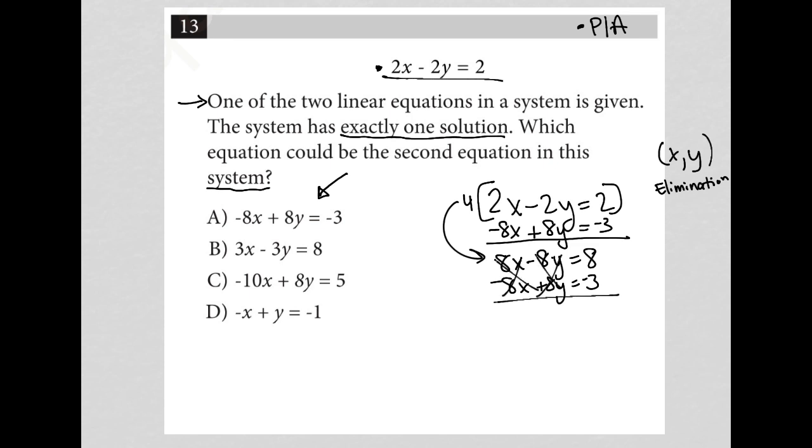Now we can very quickly see that both 8x and y cross out, leaving me with 0 equals 5. This is a situation which we would say there is no solution, not exactly one solution but no solution. So choice A is gone.